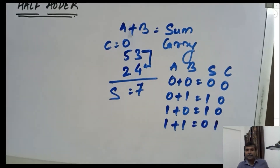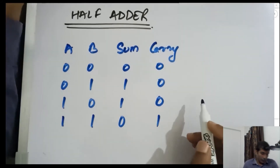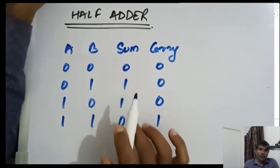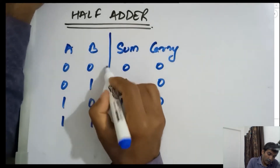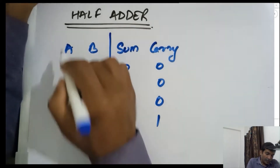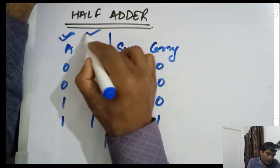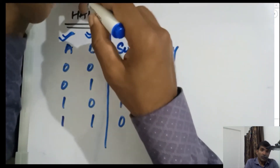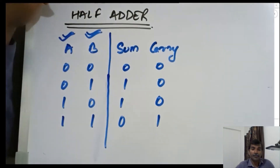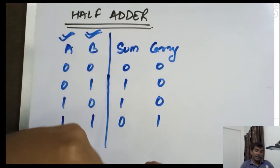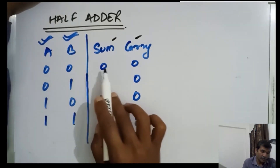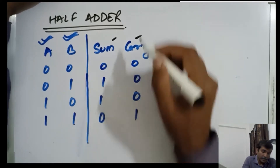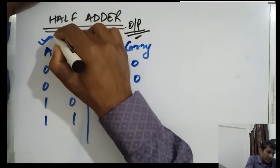Similarly, when one is added to one, the sum is zero and the carry is one. This is the truth table of a half adder, where A and B are the two input bits, and sum and carry are the two outputs.